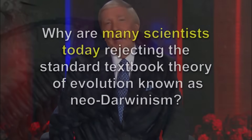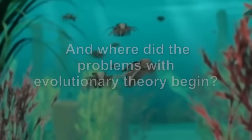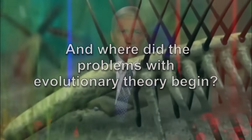Welcome to our program. I'm John Inkeberg. Thanks for joining me. Our topic is: why are many scientists today rejecting the standard textbook theory of evolution known as neo-Darwinism? And where did the problems with the contemporary evolutionary theory begin? For the last few weeks we've been looking at the theory of evolution and the scientific problems confronting it with scientist and philosopher Dr. Stephen Meyer.